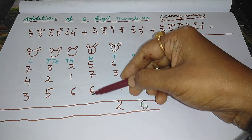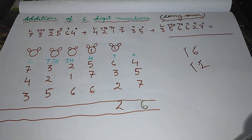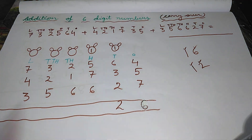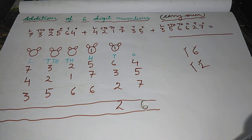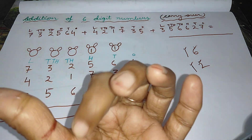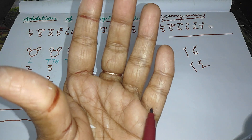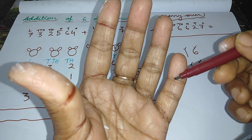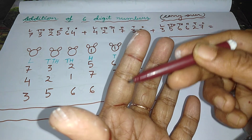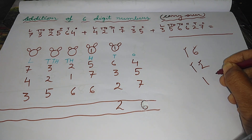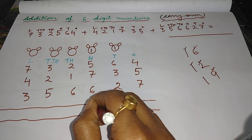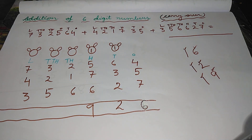Now add all the digits that belong to hundred's place. The first digit is one, count one. The second is five, count five more. Then seven, count seven more. Then six, count six more — giving a total of nineteen lines. Write the last digit, that is nine, in hundred's column and carry the first digit, that is one, into the next column, that is the thousand's column.